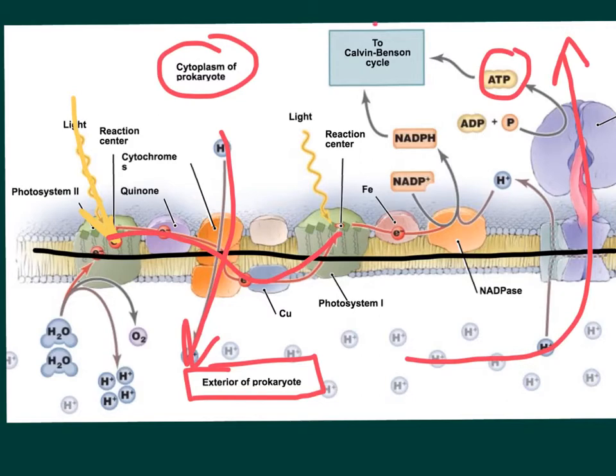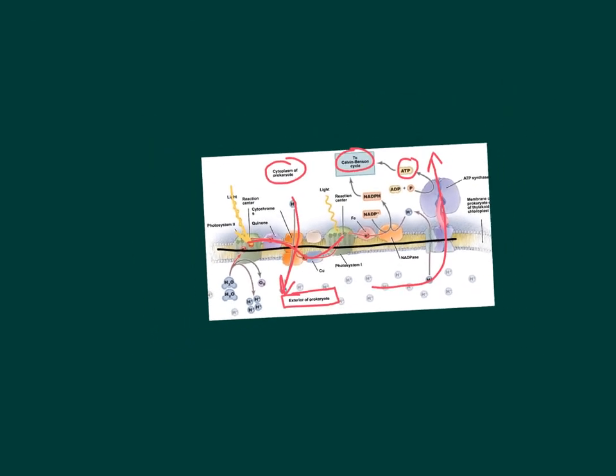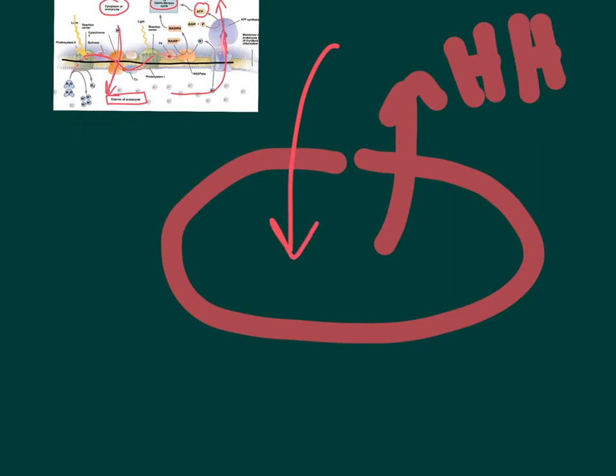And then we'll continue on to the Calvin-Benson cycle. So again, if I just kind of shrink all this down a little bit, and draw a prokaryotic organism. So I pump hydrogens outside. And once I pump those hydrogens outside, then they will come back inside and make my ATP. And that's essentially photosynthesis. And then Calvin cycle happens in here again, inside the cytoplasm. And that's essentially photosynthesis in prokaryotic organisms.